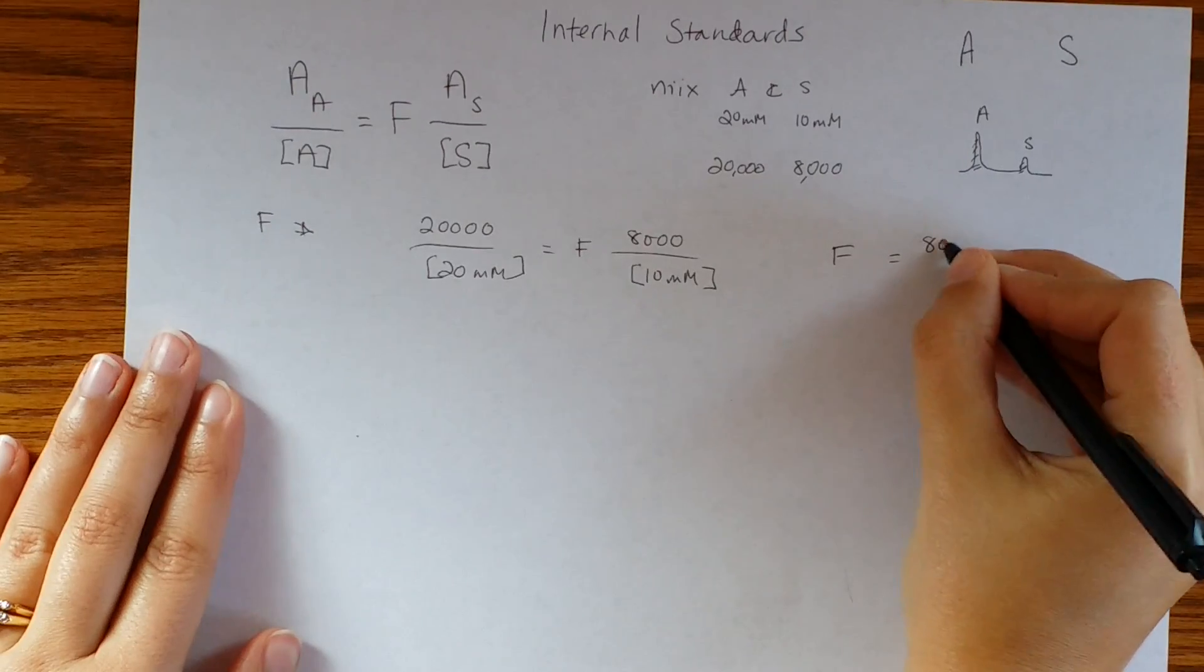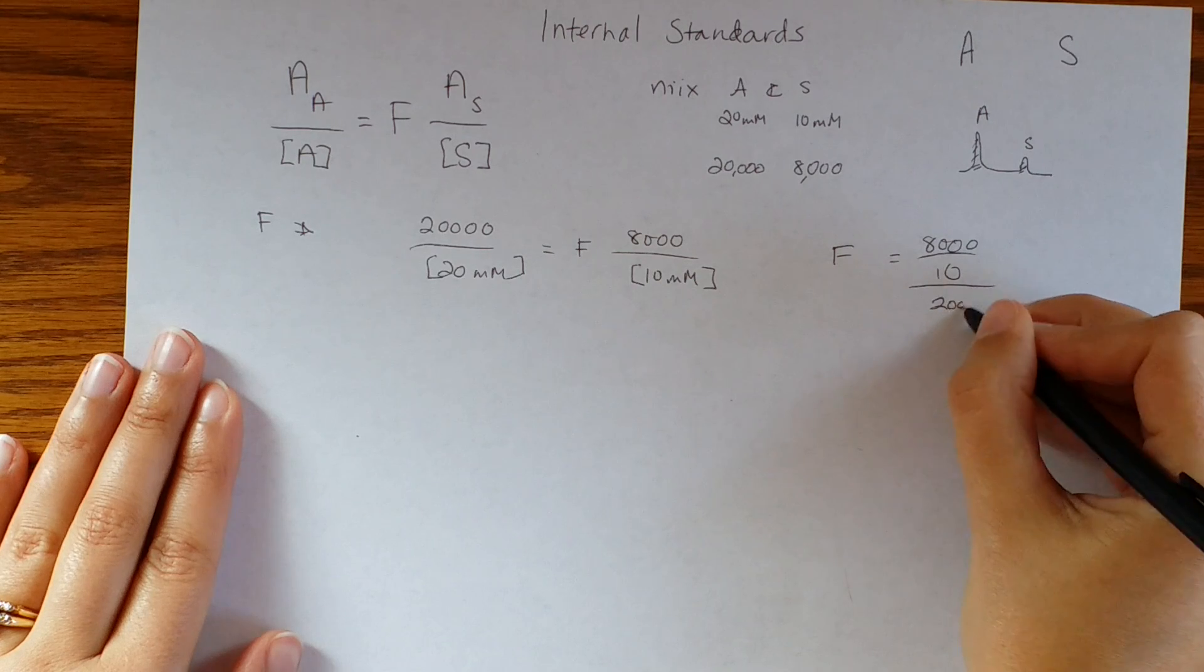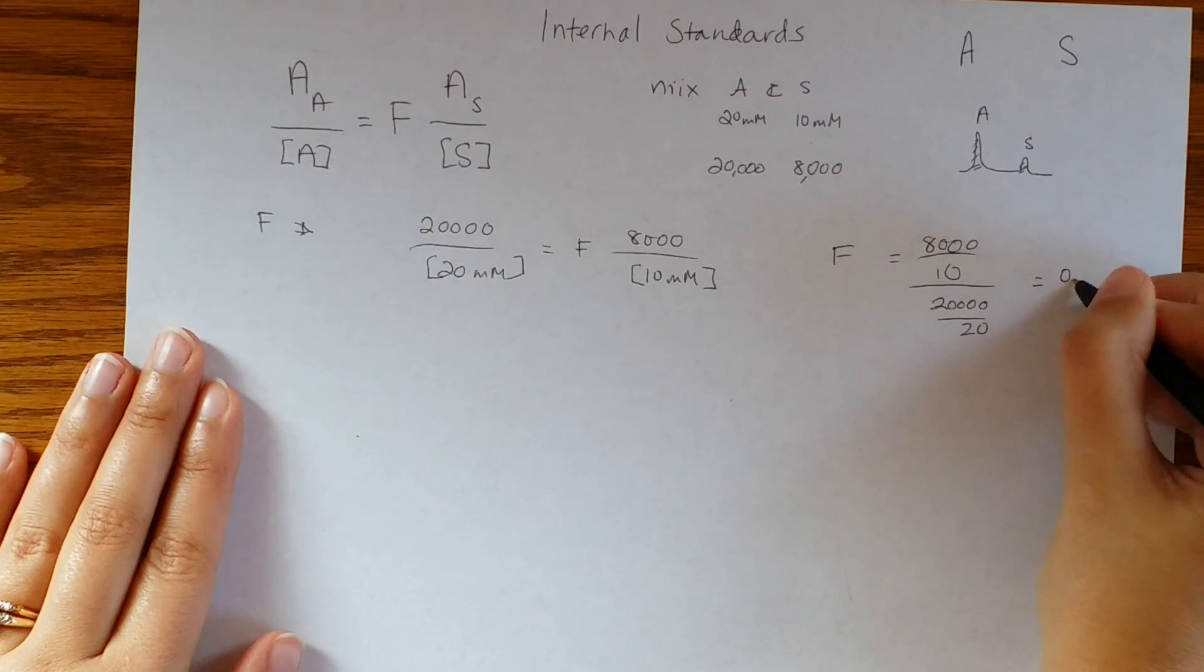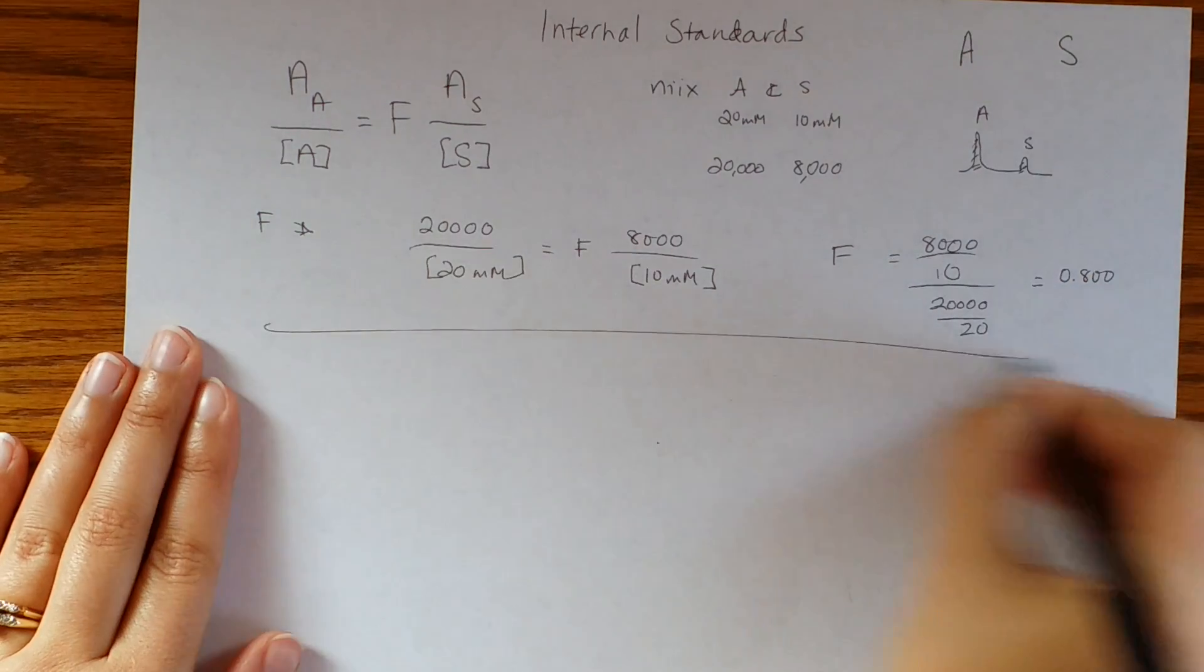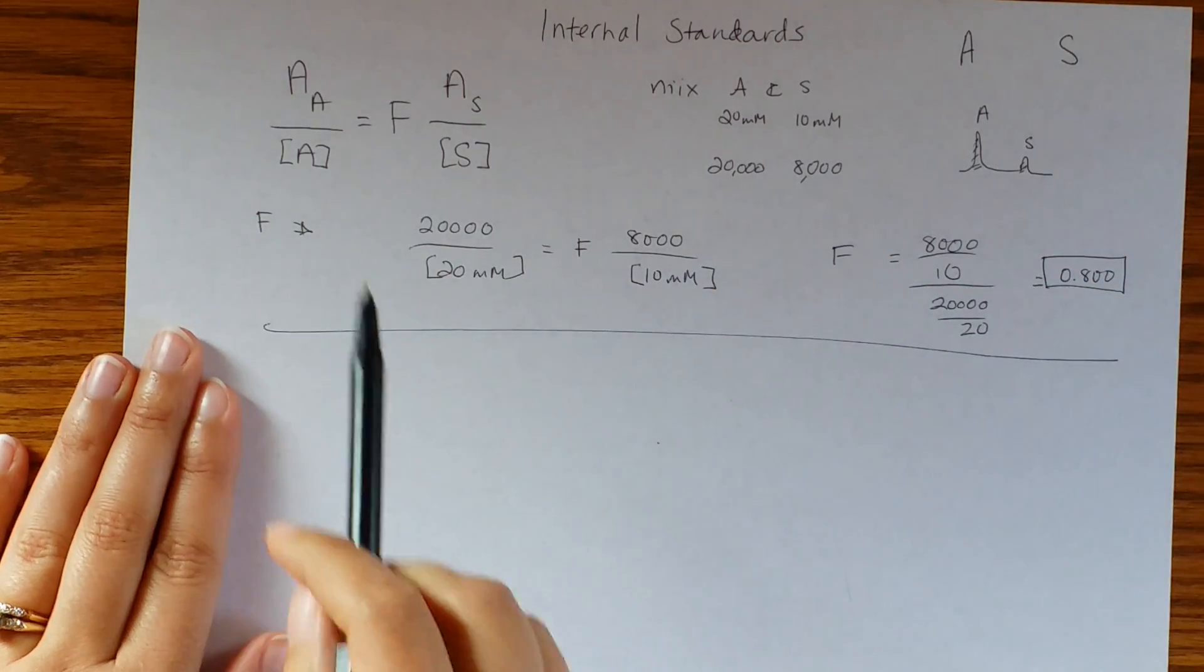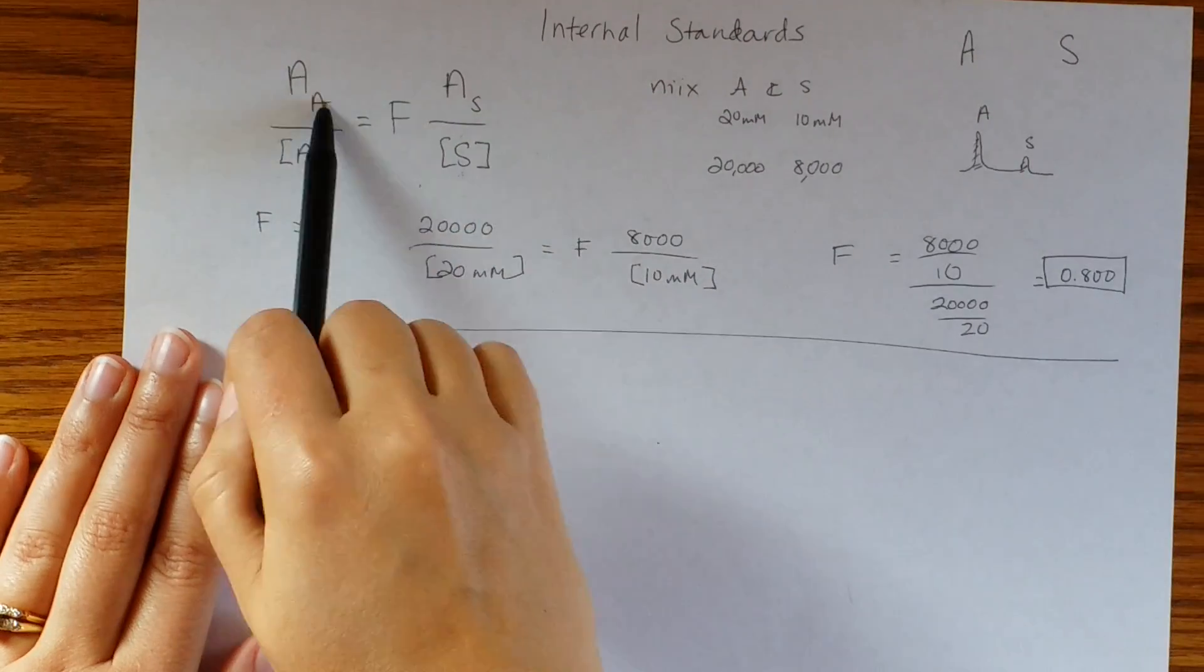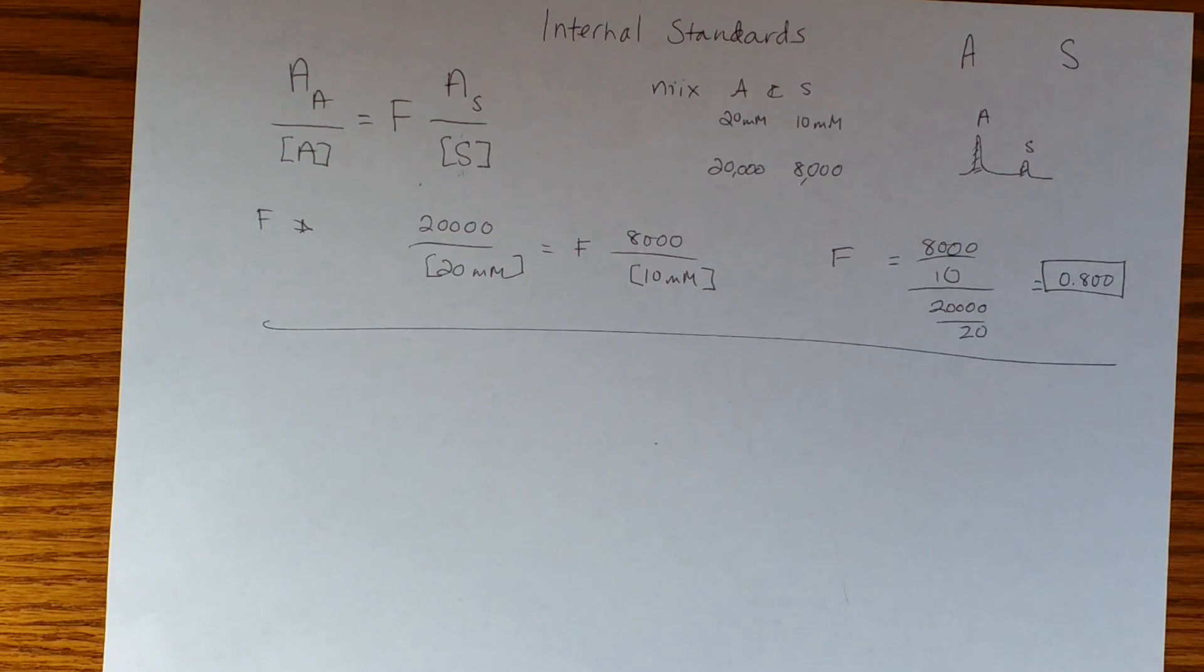You do this, you have to then rearrange it. So F equals the 8,000 over 10 divided by the 20,000 over 20, and that ends up being 0.800. So good, we know what the response factor is, we know what F is, and now that means we can use this equation anytime because we'll always know what our concentration of standard is. You can always measure the two areas, and of course the concentration of analyte is what we're ultimately looking for.